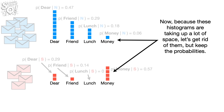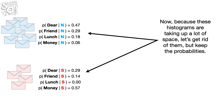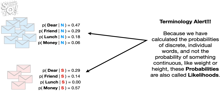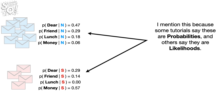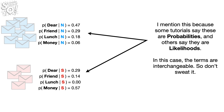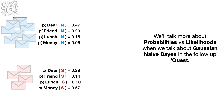Because these histograms are taking up a lot of space, let's get rid of them but keep the probabilities. Terminology alert: because we have calculated the probabilities of discrete, individual words — and not the probability of something continuous, like weight or height — these probabilities are also called likelihoods. Some tutorials say these are probabilities, and others say they are likelihoods. In this case, the terms are interchangeable, so don't sweat it. We'll talk more about probabilities versus likelihoods when we talk about Gaussian Naive Bayes in the follow-up quest.